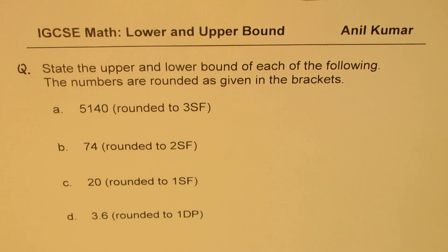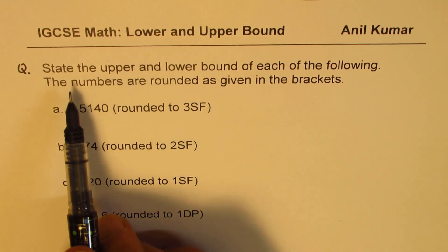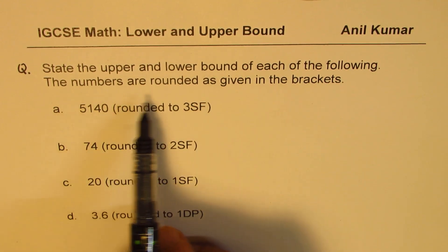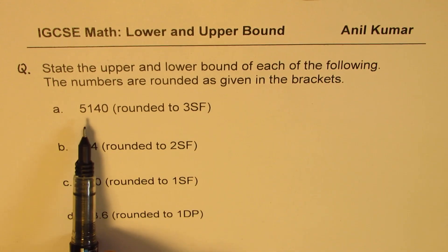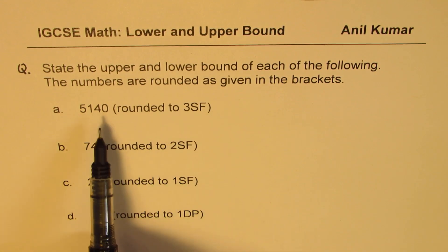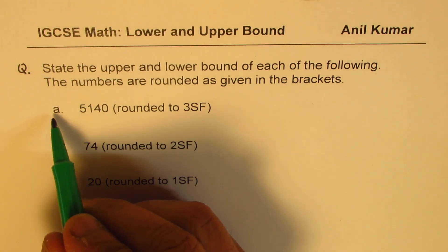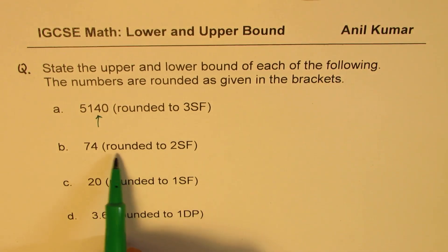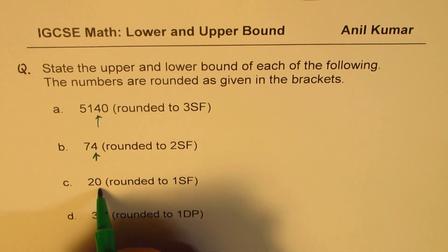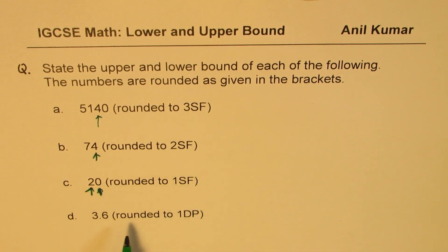Now that we have understood upper and lower bounds, rounding, and significant figures, we'll apply these principles to answer four questions: state the upper and lower bound of each of the following, where the numbers are rounded as given in brackets. The first number is 5140, rounded to three significant figures. The second is 74, rounded to two significant figures. The third is 20, rounded to one significant figure. And the fourth is 3.6, rounded to one decimal place.